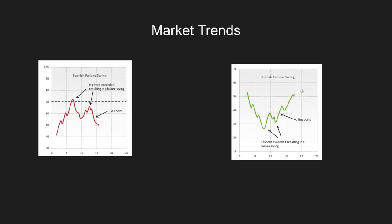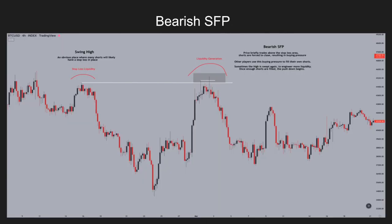For the bullish failure swing diagram: price is making lower highs and lower lows, we have that swing point, it comes up making a higher high, comes back down, and the low was not exceeded — resulting in a failure swing. Price came below this low but ended up pumping all the way back up and closing above the level. That's what an SFP really looks like. You place your buy orders here with your stop loss below the low. I have an actual Bitcoin four-hour chart example here showing a bearish SFP.